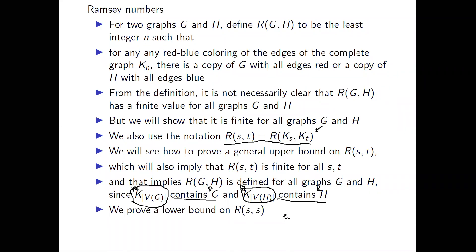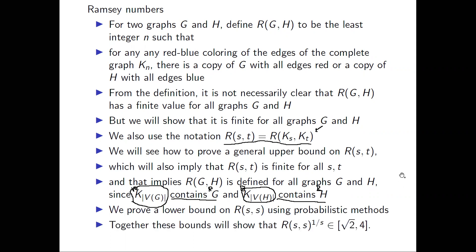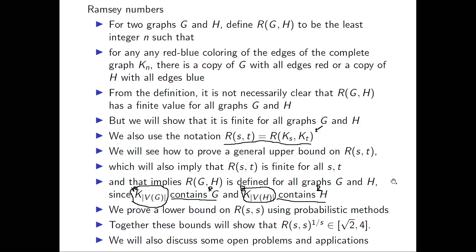In addition to the upper bound, we're also going to prove a lower bound in the diagonal case — when s equals t. So we'll prove a lower bound on R(s, s). This is going to be where we use probabilistic methods; in particular, we'll use the union bound. When we combine our upper and lower bounds, we'll see that the s-th root of R(s, s) is in the interval [√2, 4]. We're also going to look at some open problems and some interesting applications.